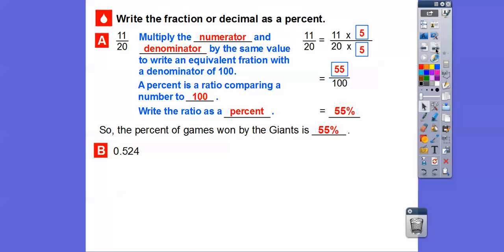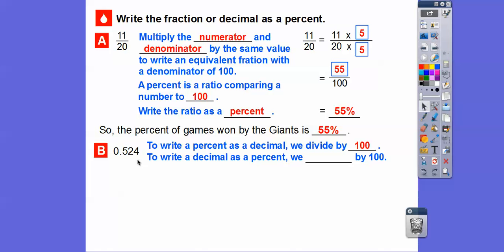Now let's convert the 0.524 to a percent. To write a percent as a decimal, we divide by 100, and to write this decimal as a percent, we're going to multiply it by 100. So to multiply by 100, all we do is move the decimal place two places to the right. To change it to a percent, we're going to move it two places to the right.